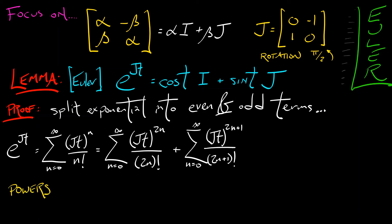And now, if I remember how powers of J work. Remember, J squared is minus the identity matrix and J to the fourth is the identity and all that stuff. Then I can simplify this greatly.